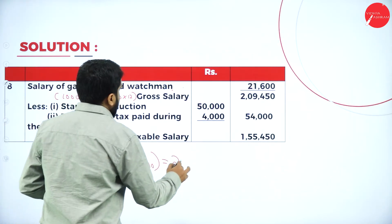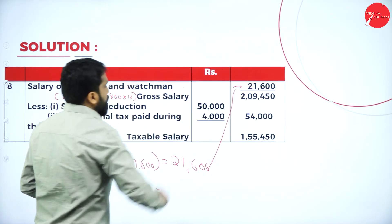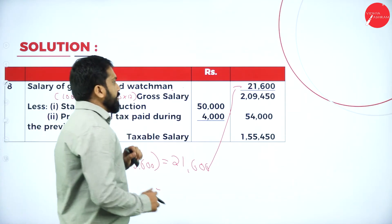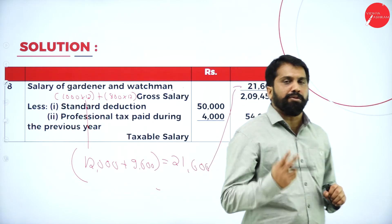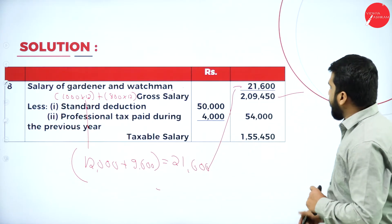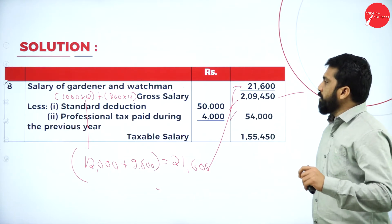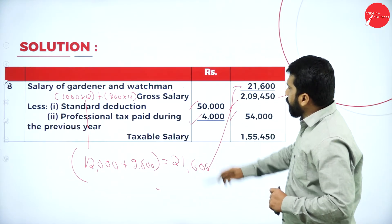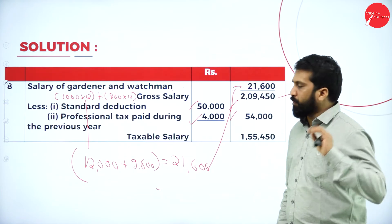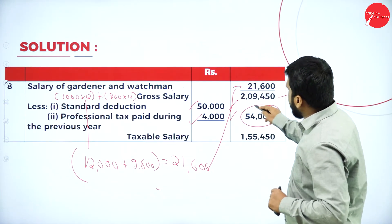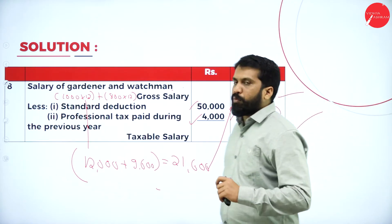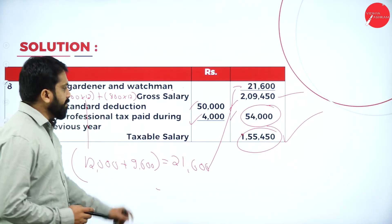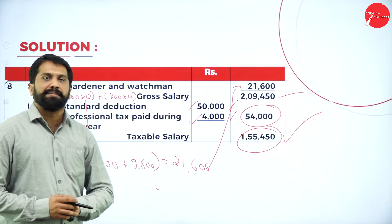Total all items — you get 2,09,450. Two deductions apply: standard deduction of 50,000 and professional tax paid of 4,000, totaling 54,000. Subtracting 54,000 from 2,09,450, your final taxable salary is 1,55,450.